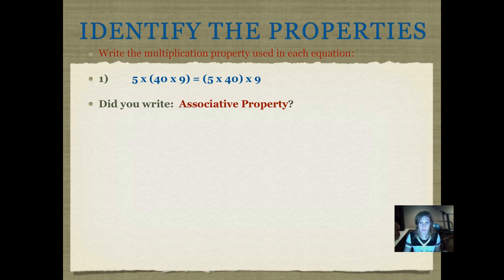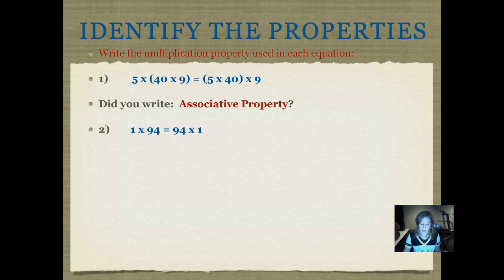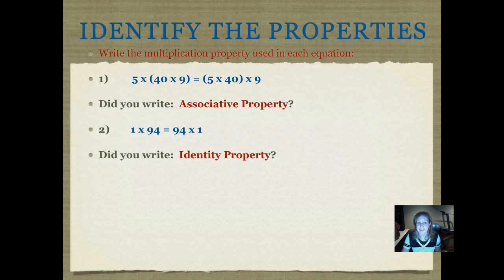Number two: 1 times 94 equals 94 times 1. Write down the property, and then push play when you're ready. Did you write identity property? Did you remember that any time you multiply a number by 1, it's going to equal that number? That's the identity property.